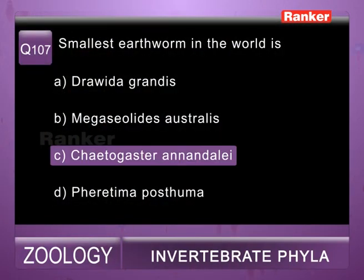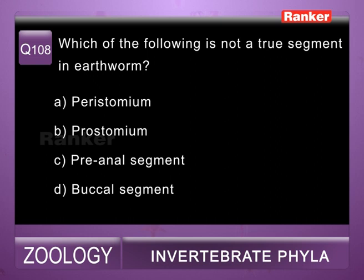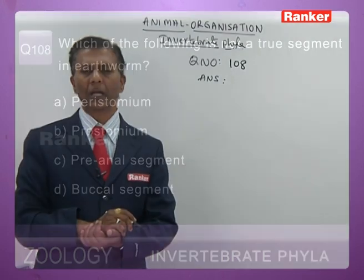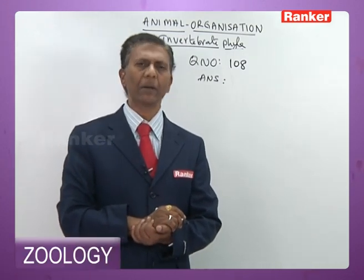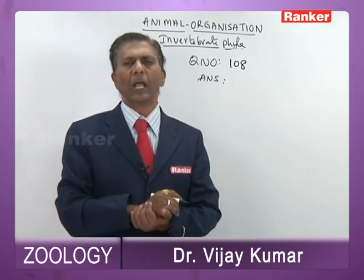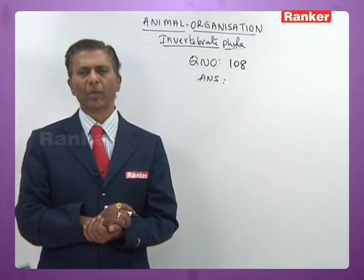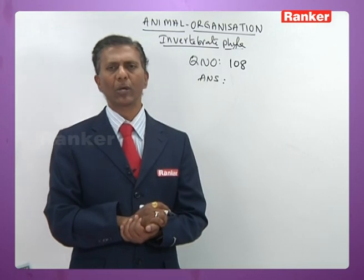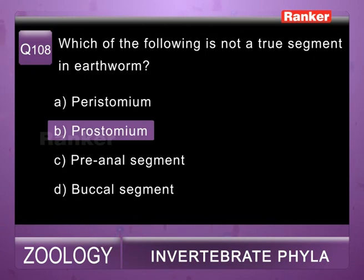Question 108: which of the following is not a true segment in earthworm — a) peristomium, b) prostomium, c) pre-anal segment, d) buccal segment. In earthworm, the first formed segment is peristomium (oldest segment). Peristomium later gives rise to a fleshy projection called prostomium. Prostomium is considered a false segment because it does not originate from pygidium and does not contain viscera. So the answer for 108th question is b) prostomium.